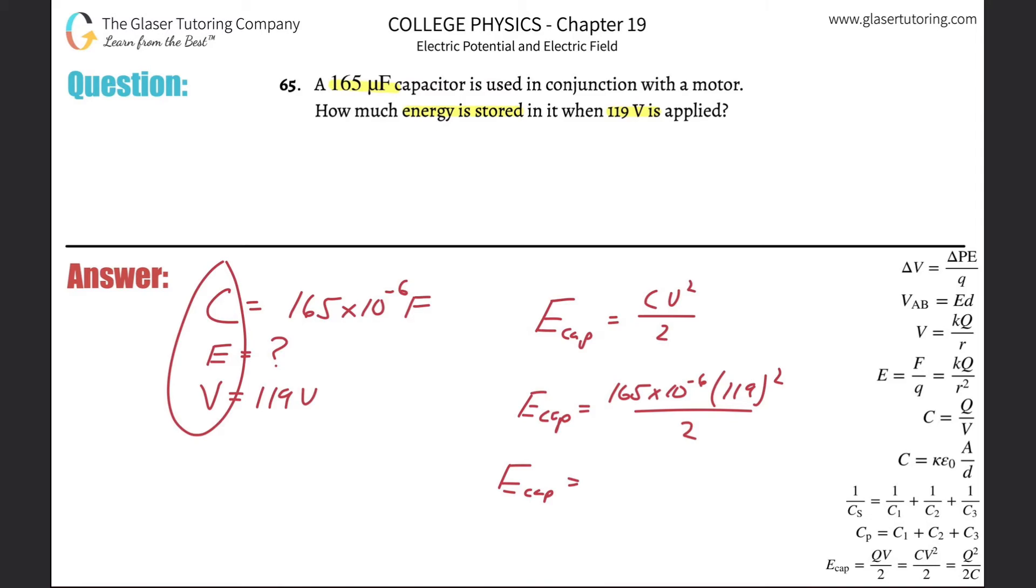And the energy is going to be 165 times 10 to the minus 6, multiplied by 119 squared, all divided by 2, 1.17. So 1.17 joules. That's it. Not times 10 to anything. Just 1.17.